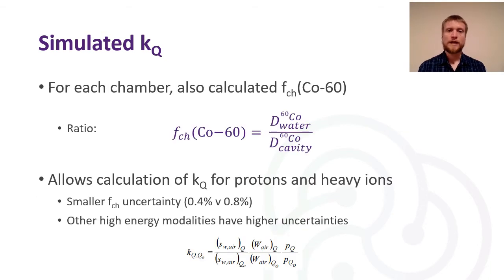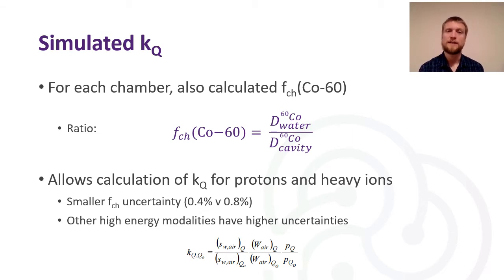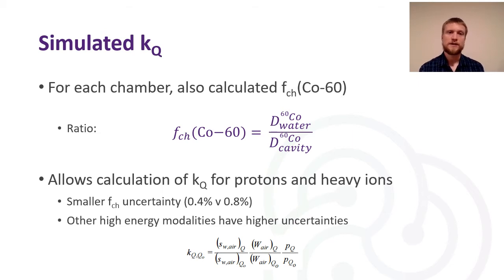For each chamber we've also calculated the FCH in Cobalt-60, which is essentially the denominator from the previous equation — the dose to water over the dose to cavity in Cobalt-60. This allows a more accurate calculation of KQ for protons and heavy ions, with a smaller uncertainty. This new consensus value has an uncertainty of 0.4% compared to 0.8% in TRS-398. It's also beneficial because a consistent set of FCH values is preferred over calculating stopping power ratios and perturbation corrections every single time, ensuring more consistency in those calculations.